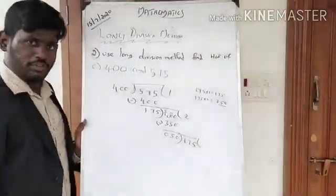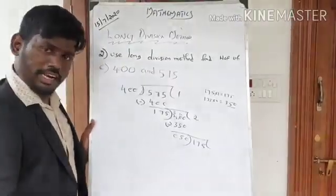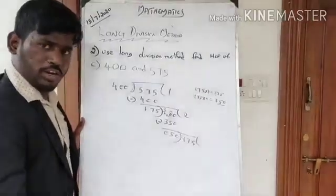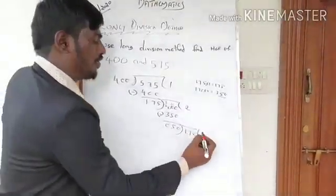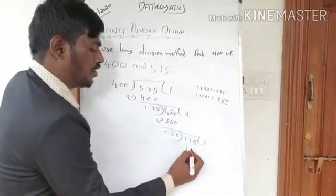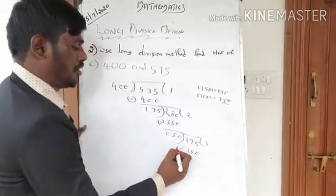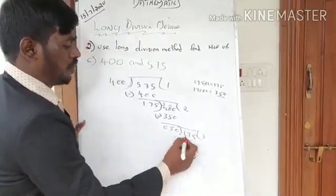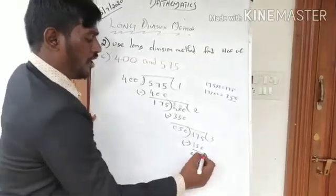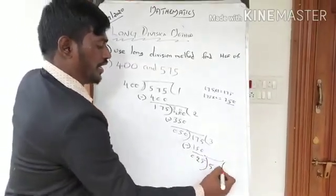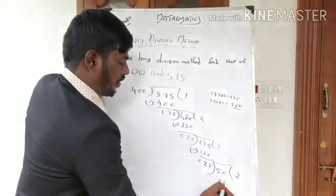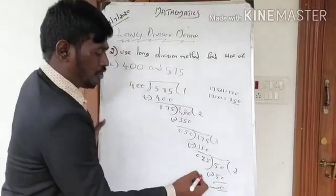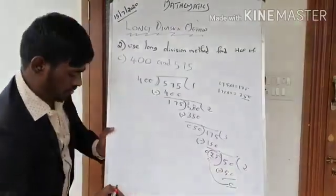Now divide 175 by 50. 50 fives are 150, 50 threes are 150 — I can write 3, so 53s are 150. Subtract: 5 minus 0 is 5, 7 minus 5 is 2, 1 minus 1 is 0. The remainder is 25. Now 25 becomes the divisor and 50 the dividend.